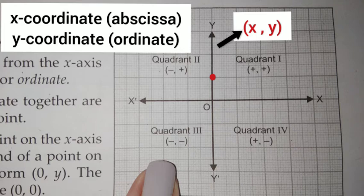The x-coordinate or abscissa, when it is zero, means the point lies on the y-axis.